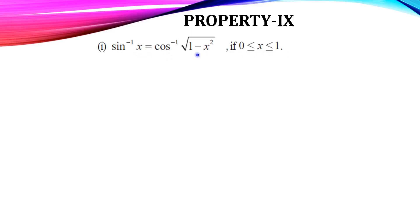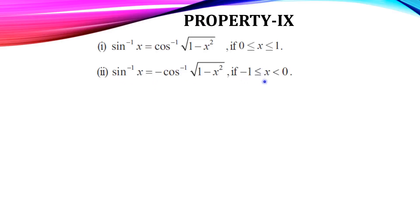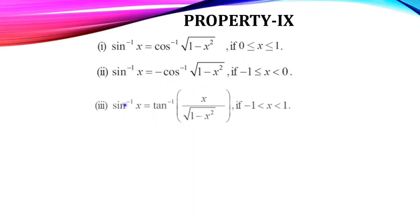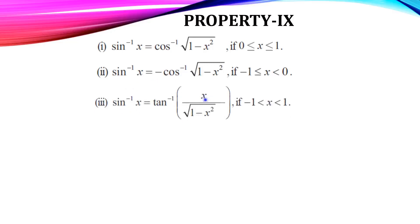Also, sin inverse x = tan inverse(x/√(1−x²)) if −1 < x < 1 (open interval). Cos inverse x = sin inverse(√(1−x²)) if 0 ≤ x ≤ 1. Cos inverse x = π − sin inverse(√(1−x²)) if −1 ≤ x < 0 (negative values).